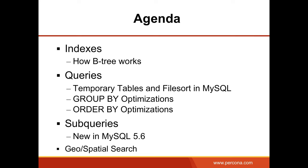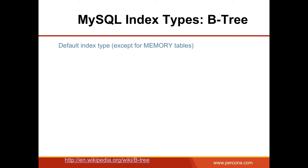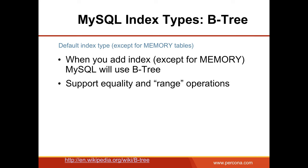Let's start with indexes. We all know that indexes are very important and are used in MySQL to optimize query performance. In MySQL, the default index type is B-tree, except for memory tables where the default index is hash. We will only talk about B-tree indexes today. B-tree indexes support both equality search and range operations, which is very important and we'll discuss in more detail.